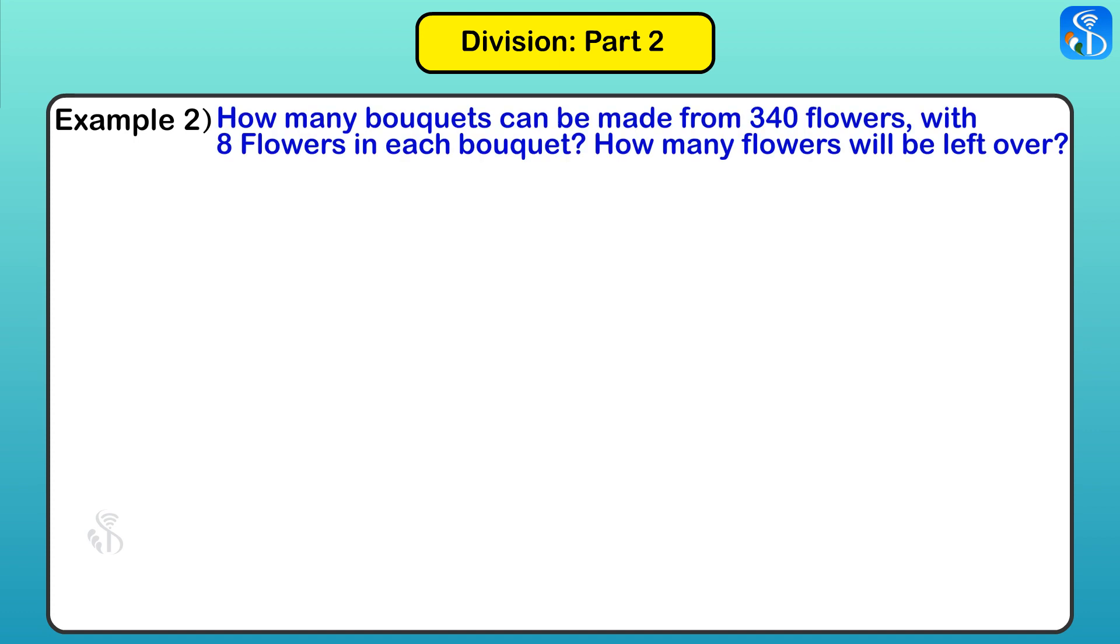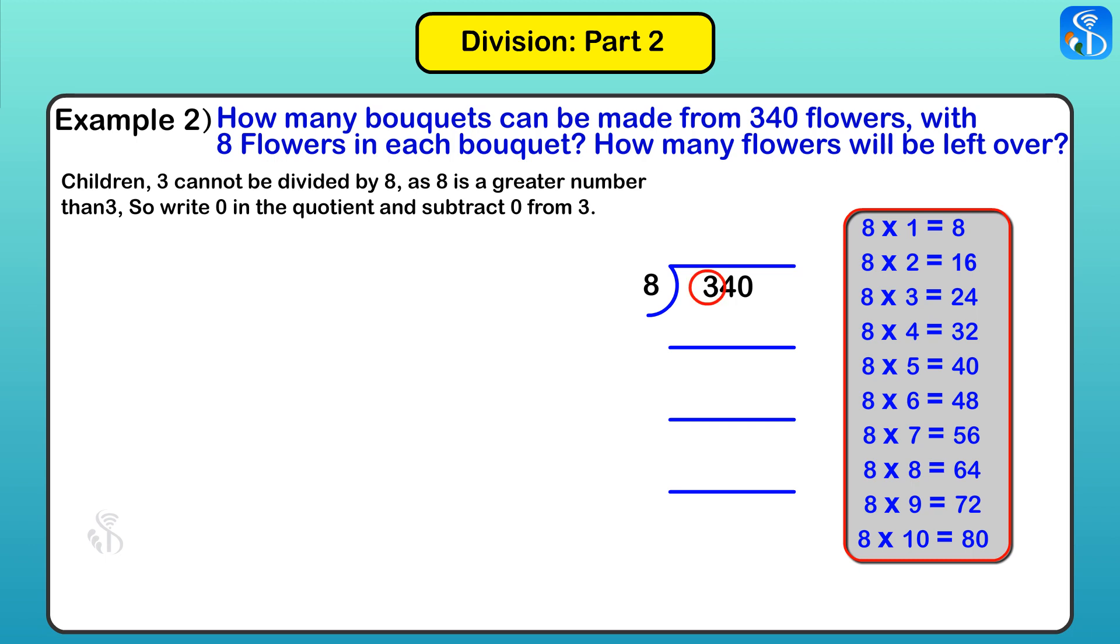Children, as you can see here, 3 cannot be divided by 8, as 8 is a greater number than 3. So write 0 in the quotient and subtract 0 from 3. Remainder will be 3.